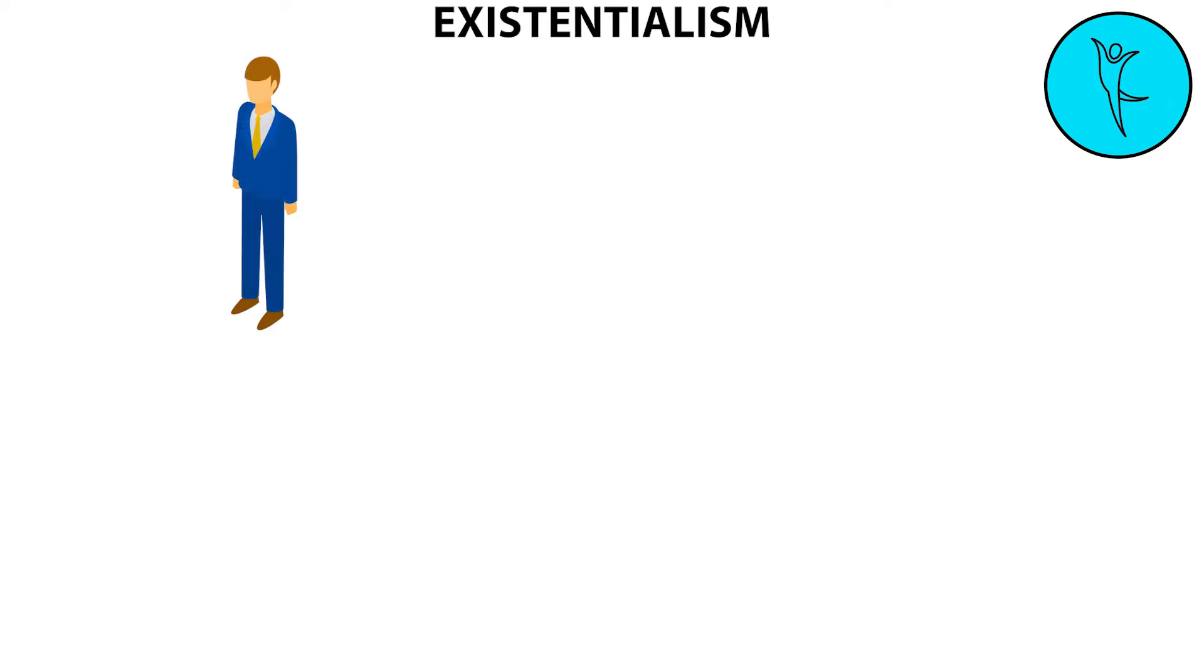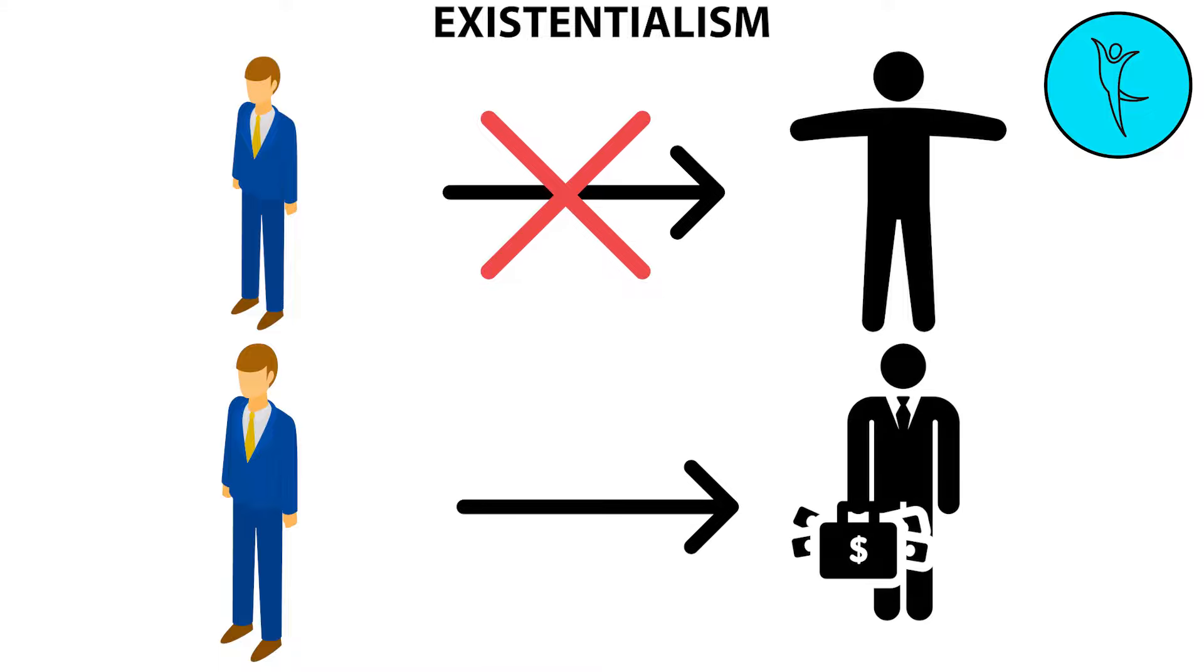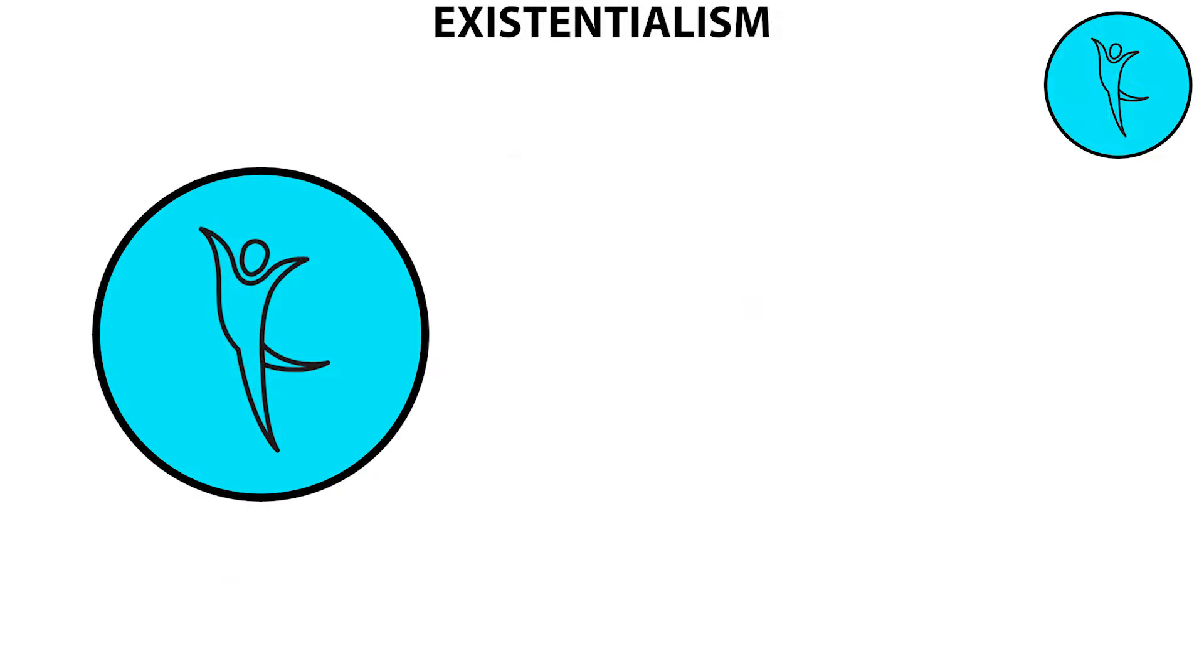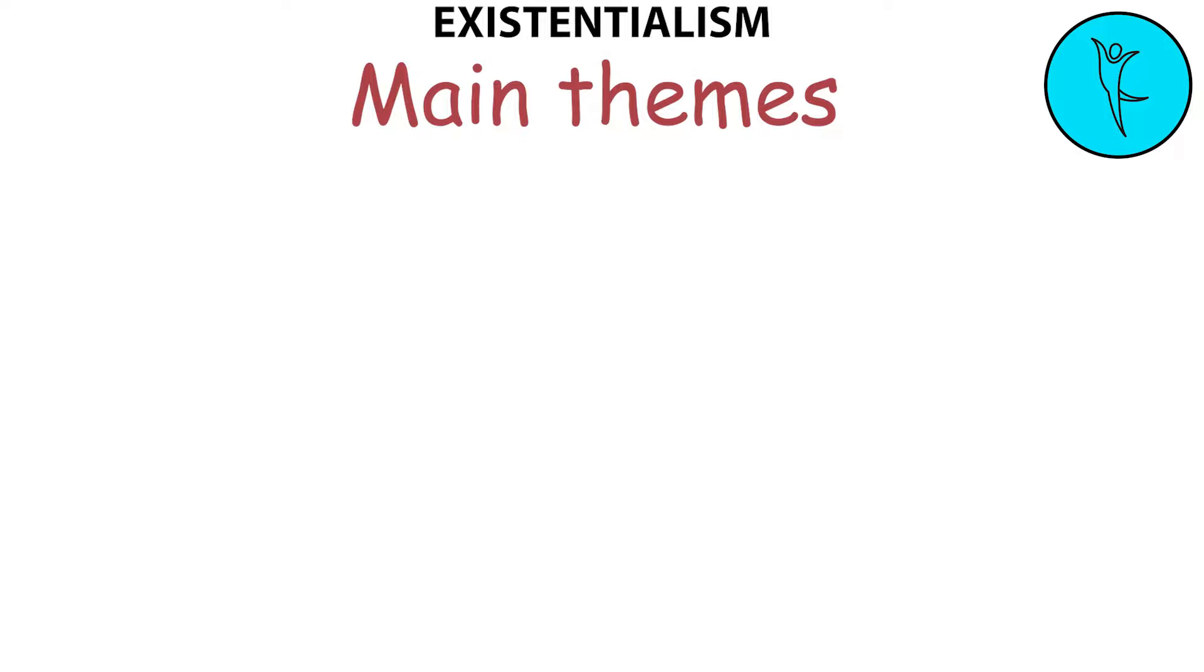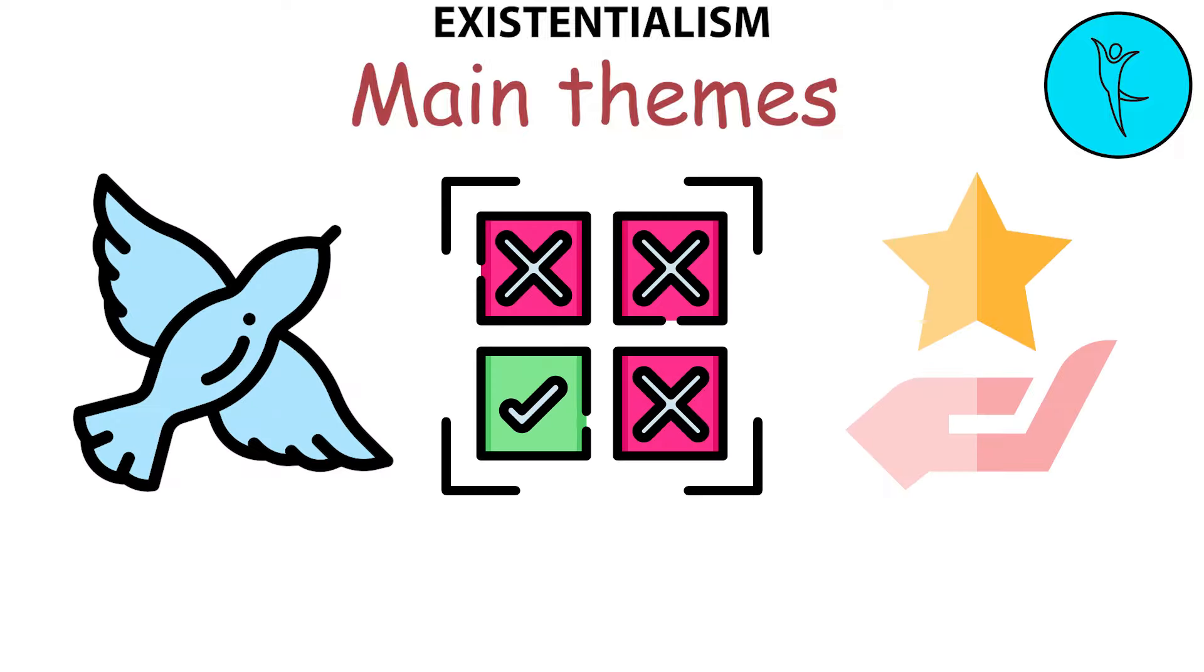Existentialism suggests that we are not complete in the sense that we are not what we are and we are what we are not. This philosophy shows that humans are always in the process of becoming. In some ways, existentialism is an approach to philosophy that shows how deeply human beings are embedded in the world. One of the main themes of existentialism is the emphasis on individual freedom, choice, and responsibility.